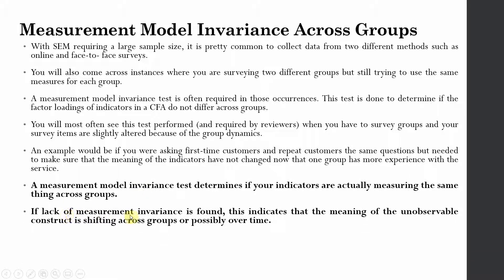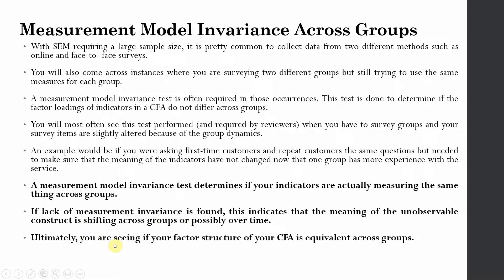If there is a lack of measurement invariance, this indicates that the meaning of the unobservable construct is shifting across groups or possibly over time. Ultimately, what you are looking for is that the factor structure of your CFA is equivalent across groups — you want to establish measurement model invariance. Lack of invariance will mean that with the change of groups there is a change in the understanding of the indicators.